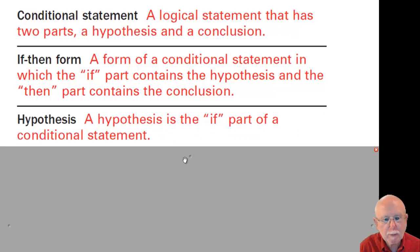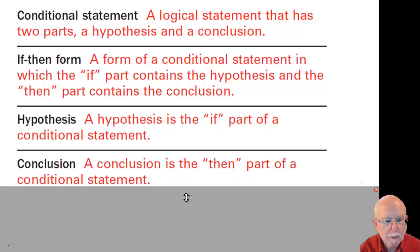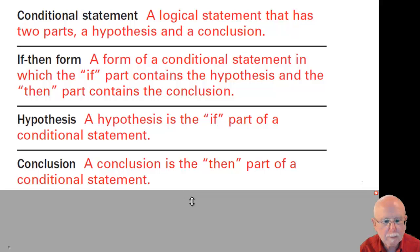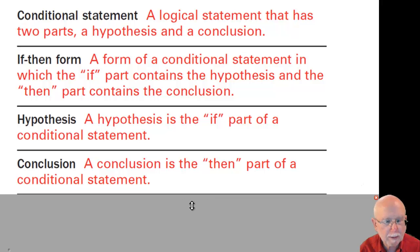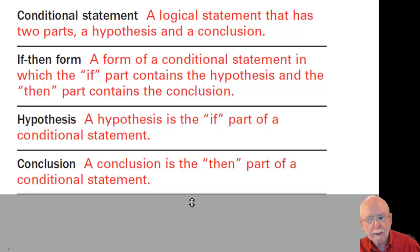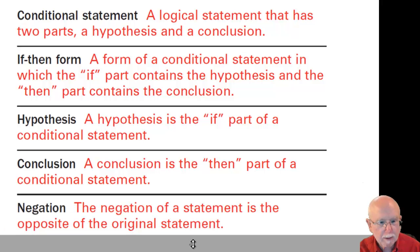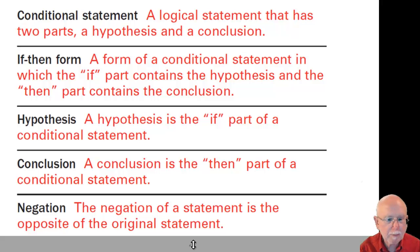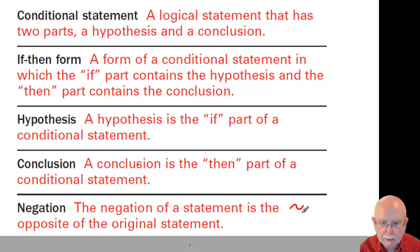The hypothesis is what follows the 'if' statement. It's generally at the beginning but does not have to be. The conclusion is what follows the 'then' — a lot of times the 'then' is going to be implied. You need to be copying all of these onto your vocabulary sheet, so you may need to pause to get these copied. And then negation: that's the opposite of the original statement. We can use the tilde symbol to indicate negation.